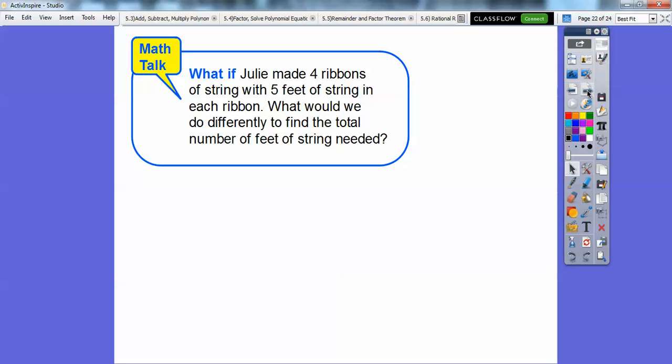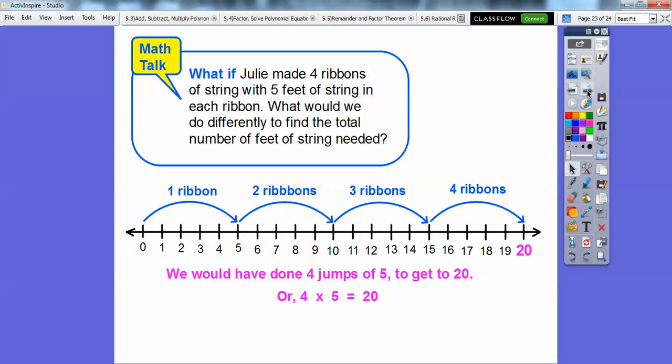What if Julie made four ribbons of string with five feet of string in each ribbon? What would we do differently to find the total number of feet in the string? We'd do the same thing except in this one we would do four jumps of five because each one is five feet. And so four jumps of five would get us out to 20. Or four times five equals 20 right there.